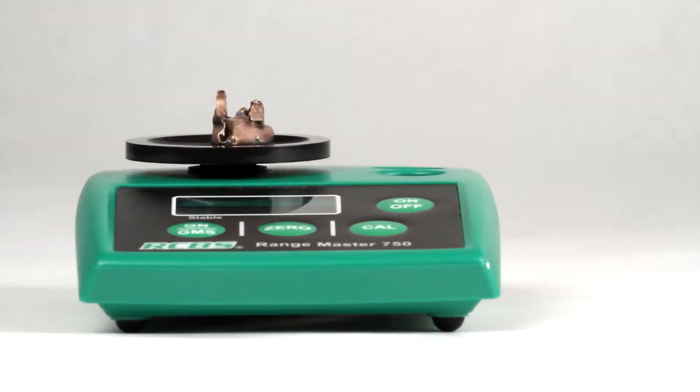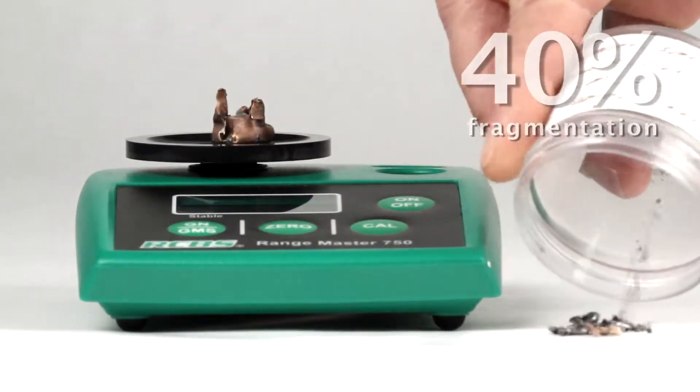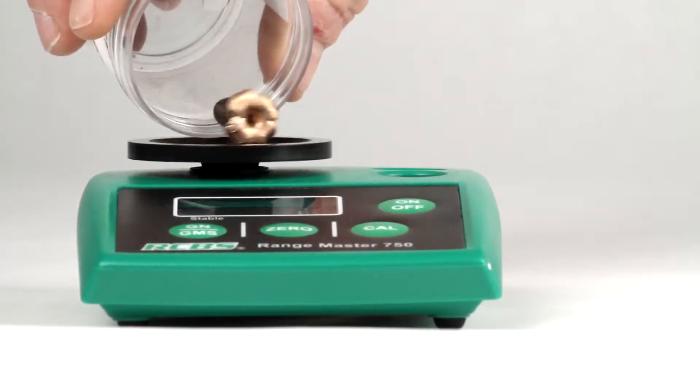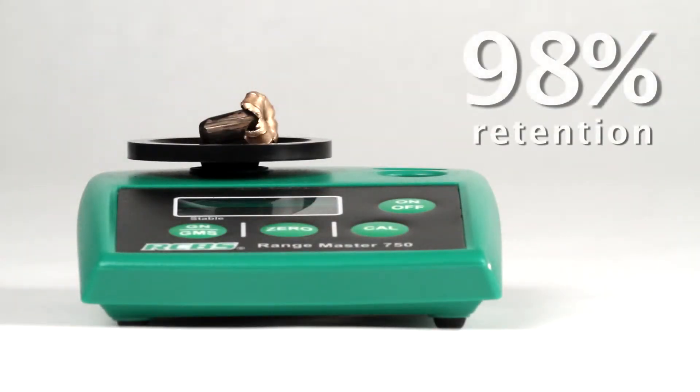When we weigh lead ammunition, we find that it can lose up to 40% of its original weight. But when we weigh the non-lead ammunition, it typically retains about 98% of its original weight.